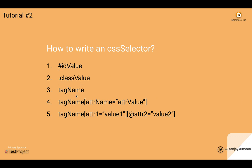If you find a tag name that is unique, then you can use the tag name. This works like we have in XPath: tag name, open square bracket, attribute name equals attribute value. You can write the attribute value inside double quotes, single quotes, or without quotes — anything is fine.